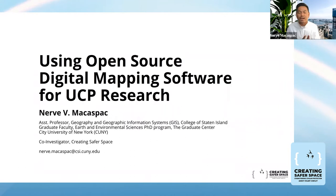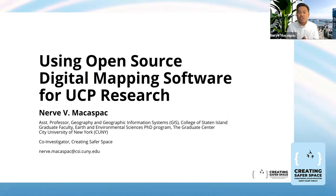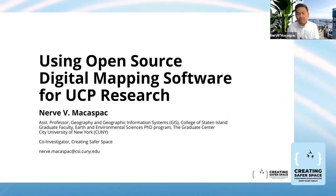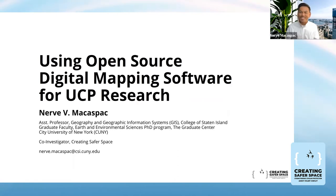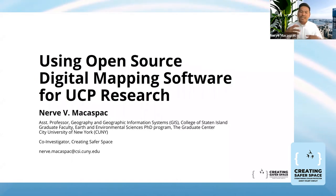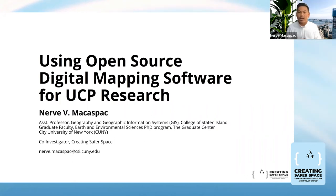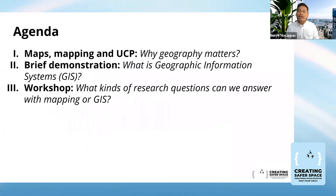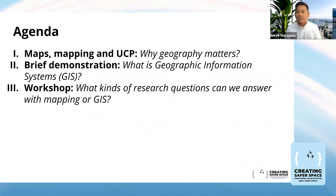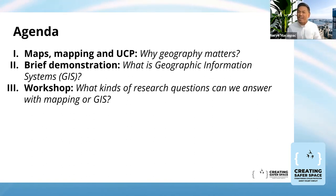For today, we'll talk about the potential uses of mapping in our research related to unarmed civilian protection. Specifically for this session, we'll talk about an open source digital mapping software. I know it sounds very technical, but I'll walk you through it, and we'll briefly go through some of the uses and potential implications for our research. I prepared three parts for our conversation today: maps, mapping, and UCP — why geography matters.